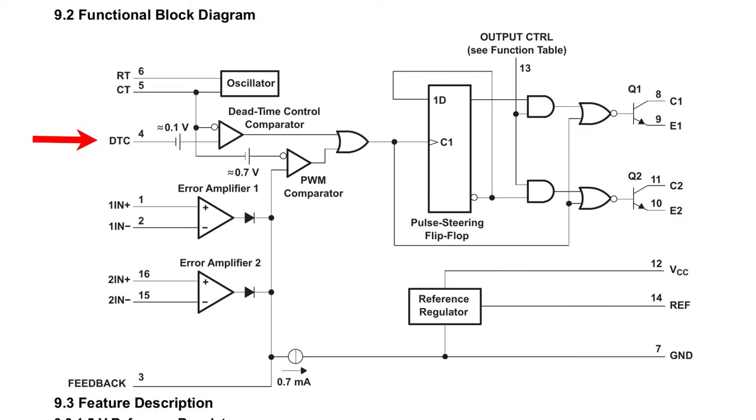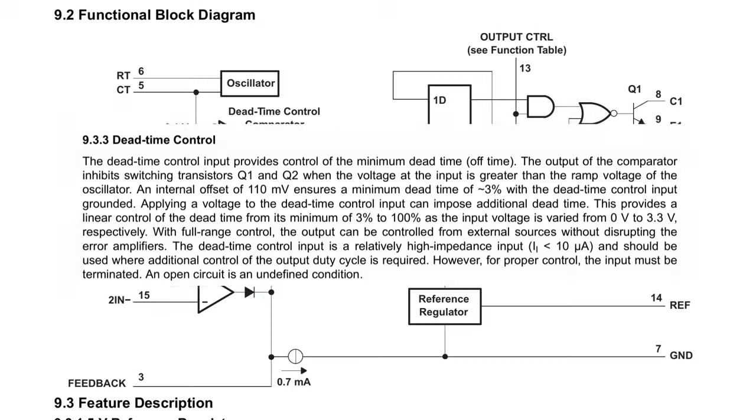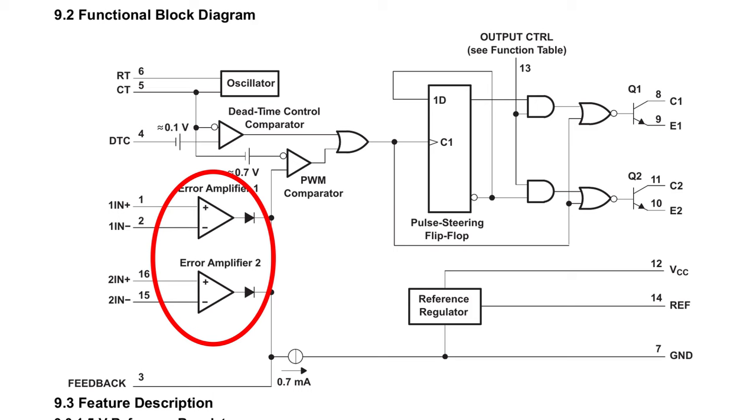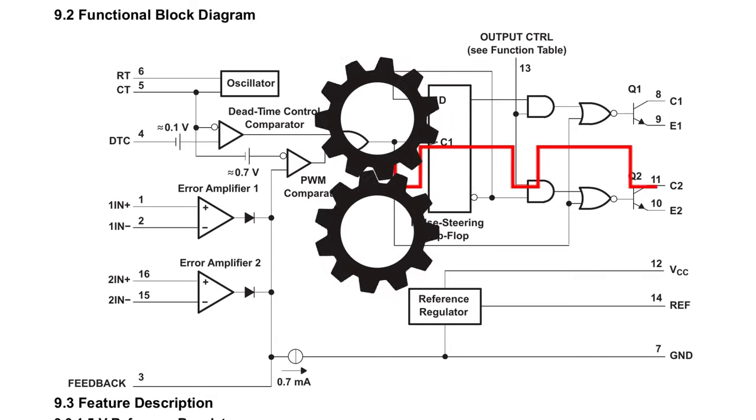Next on pin 4 we have the dead time control. This limits the dead time based on the analog voltage applied to it. Then we have two error amplifiers and these can be used to control voltage and current if we want. In my case I'm just going to use one for the voltage control. Then we have the feedback pin that's used for the control that's just the output of the error amplifiers. And then in the middle we see that it basically generates a PWM and it outputs it on the right.